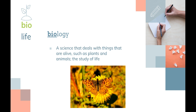Your first word is biology. This is a science that deals with things that are alive, such as plants and animals — it is the study of life. Biology covers a lot of topics, anything that is alive. This includes cells, people, plants, and animals — all sorts of living things.